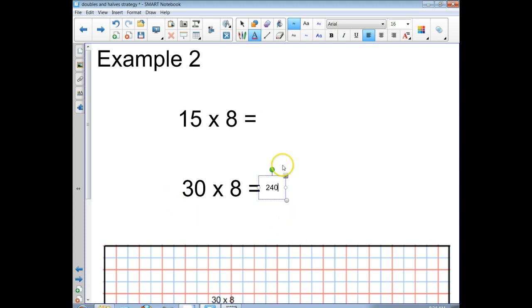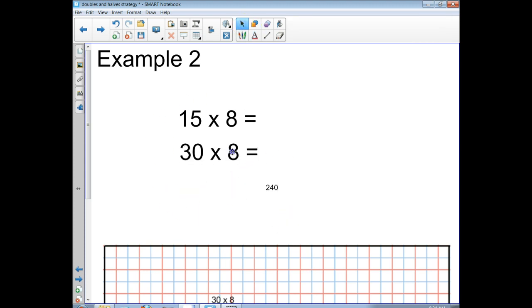So now how can I use that to help me get the answer to 15 times 8? Well, let's look here. We've got the 8 is staying the same, so that factor is not changing. But the 15 and the 30, that factor is changing. How is it changing? If you said 15 is half of 30, you're correct. So half of 15 is 30.